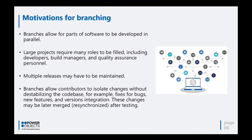Another motivation for branching is that it allows contributors to isolate changes. When you are developing something and you release that into test, there is testing from a functional consultant. If the customer says they'd like to change a few things, the motivation for branching in this scenario is that you want to isolate that change — perhaps creating a new extension on your object. So branching will allow you to do that.